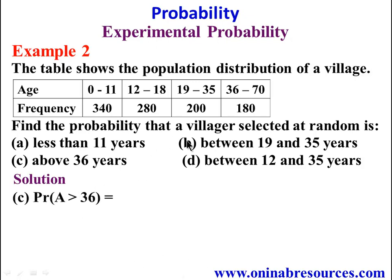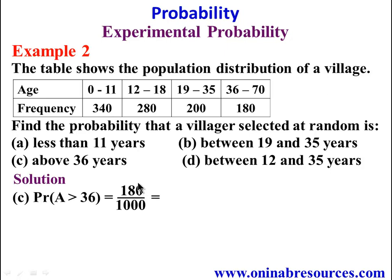For part C, the probability that a villager selected at random is above 36 years will be on the age bracket between 36 years and 70. The frequency there is 180 over 1000. Cancelling zeros, that gives 9 over 50.